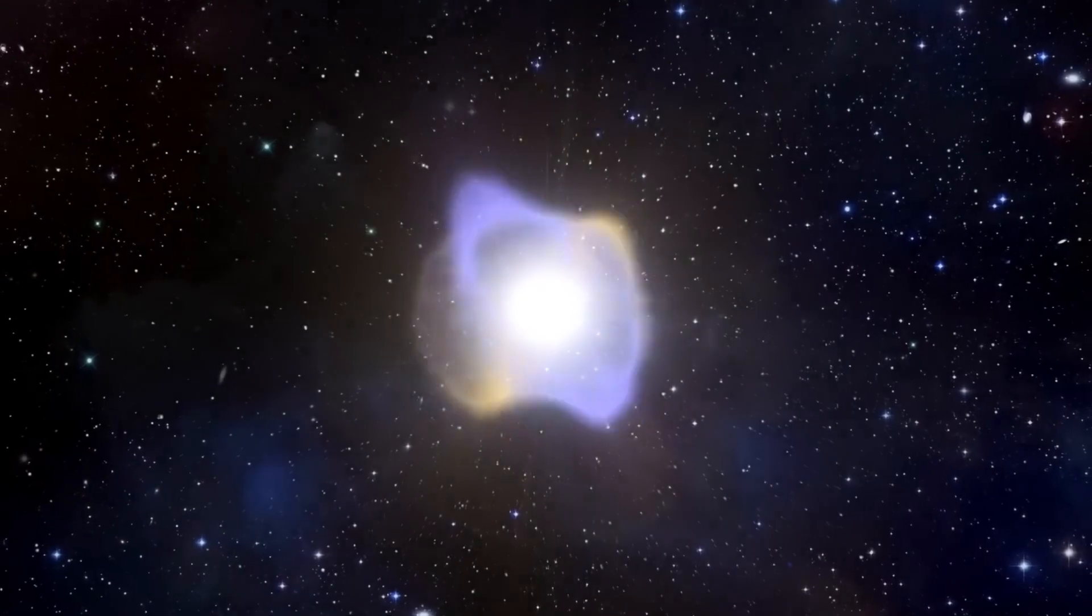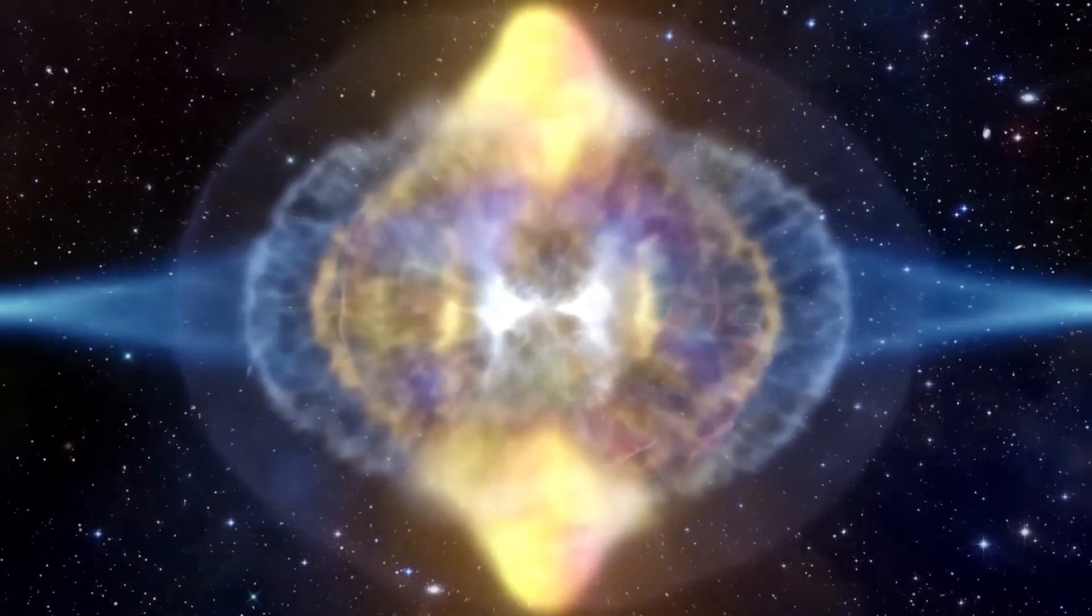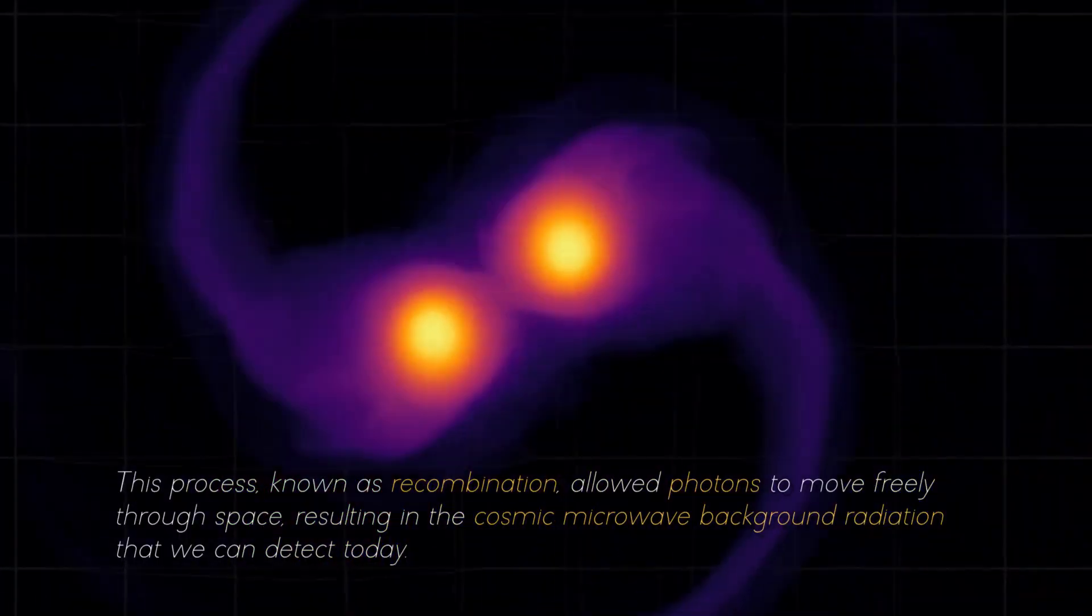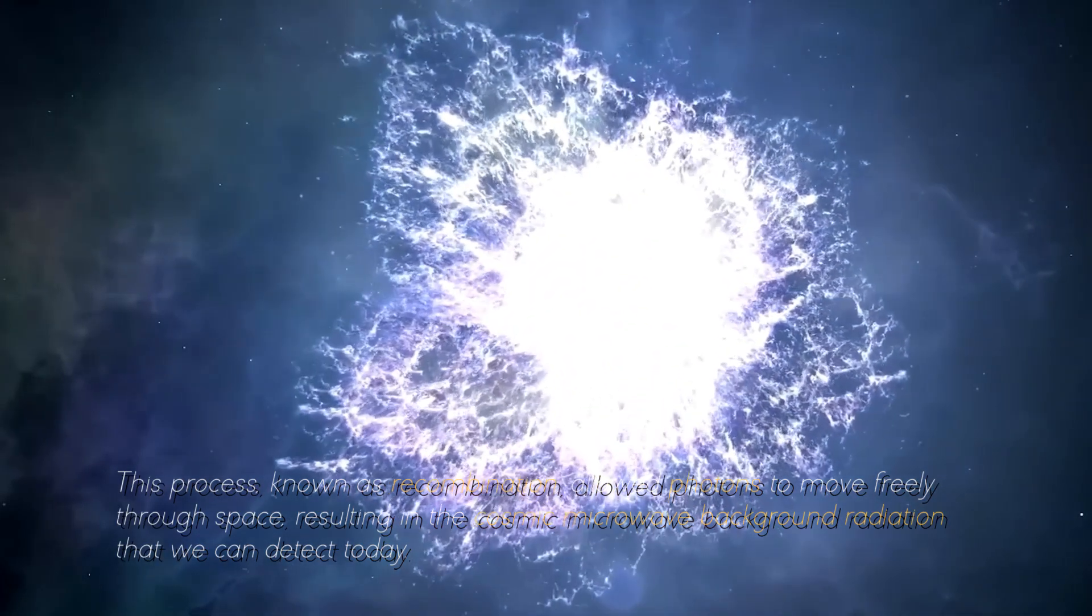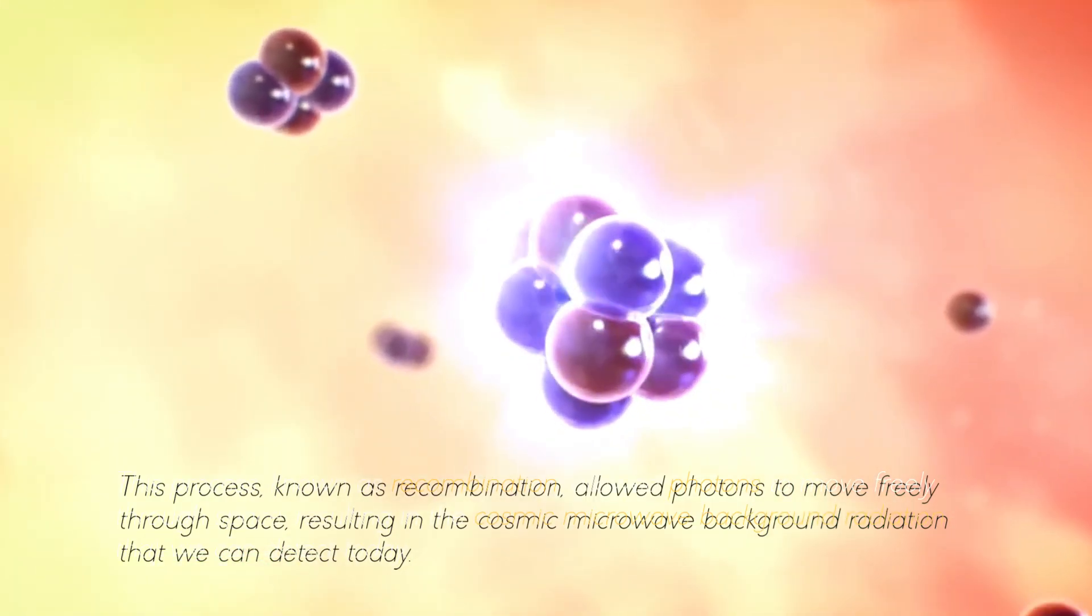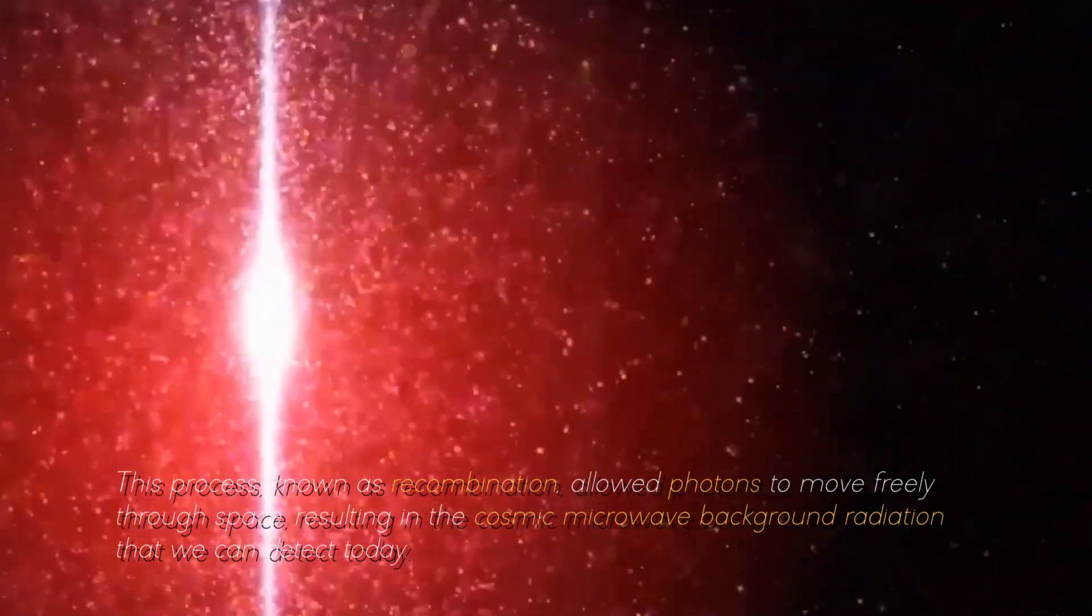As the universe cooled due to its expansion, the temperature dropped enough to allow electrons to bond with protons and form neutral atoms. This process, known as recombination, allowed photons to move freely through space, resulting in the cosmic microwave background radiation that we can detect today.